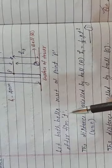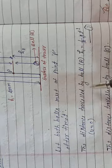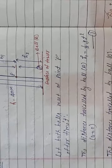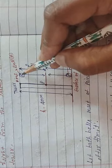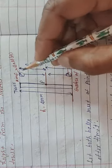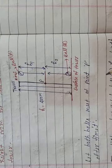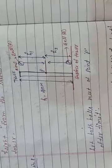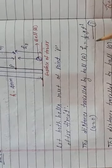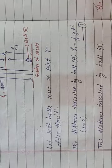Let both balls meet at point P after time t. The distance travelled by ball A: since the ball is dropped vertically downward, the initial velocity u = 0. So h1 = ½gt² — this is equation number 1. The distance travelled by ball A using h = ut + ½gt², since u = 0, h1 = ½gt².